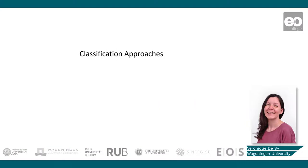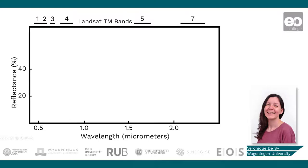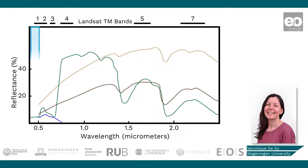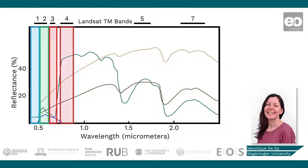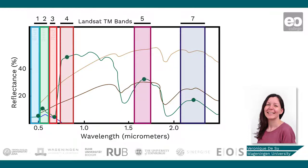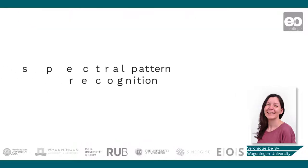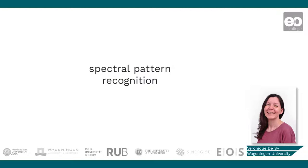There are several approaches to perform digital image classification. Spectral image classification uses spectral information represented by digital numbers or pixel values in one or more spectral bands, and attempts to classify each individual pixel based on the spectral information. This type of classification is also called spectral pattern recognition.